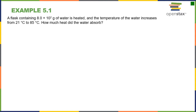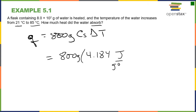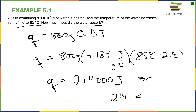Let's do some math. How much heat is going to be absorbed when 800 grams of water increases in temperature from 21 to 85 degrees Celsius? We know Q = mass × specific heat capacity × delta T, which equals 800 grams × 4.184 joules per gram degree Celsius × (85 − 21) degrees Celsius. The total heat equals 214,000 joules or 214 kilojoules. Remember there are 1,000 joules per kilojoule. The temperature is going up so Q is positive and this reaction is endothermic.